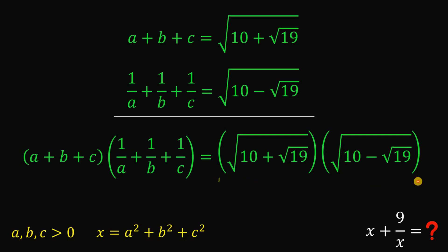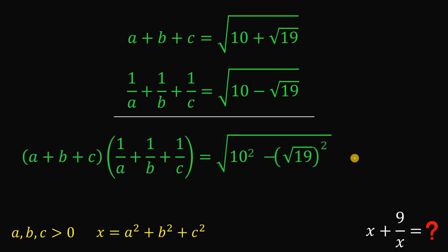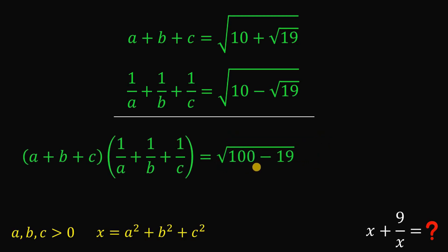The right-hand side of our equation is equivalent to the square root of the product of the numbers inside the radical sign. This is just the square root of (10 plus square root of 19) multiplied by (10 minus square root of 19). This is a sum and difference, so when we multiply, we have 10 squared minus square root of 19 squared, which is 100 minus 19, which simply equals 81.